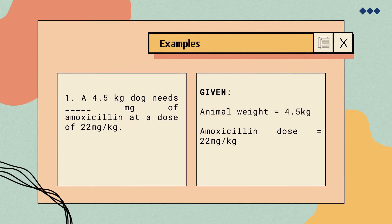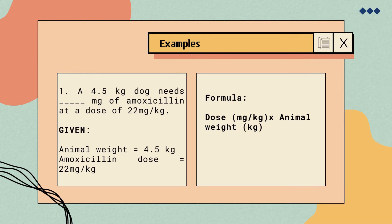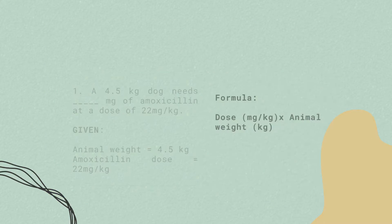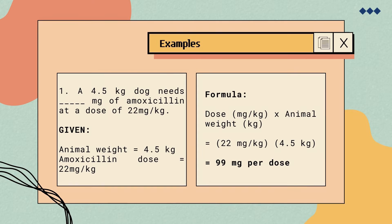Problem number 1: a 4.5-kilogram dog needs blank milligrams of amoxicillin at a dose of 22 milligrams per kilogram. The given are 4.5 kg for the animal weight and 22 mg/kg for the dose of amoxicillin. We multiply the animal weight by the dose: 4.5 kg times 22 mg/kg equals 99 milligrams per dose. This means that a 4.5-kilogram dog needs 99 milligrams of amoxicillin.